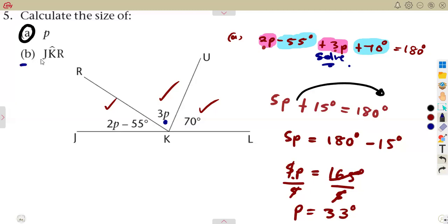Then part b: JKR. That is J to K to R, which is this angle here. The angle formed is the one that we are supposed to calculate, which is given in this case as 2p minus 55 degrees. We have the value of p, so remember, 2p means two times the p that we calculated, which is 33 degrees.